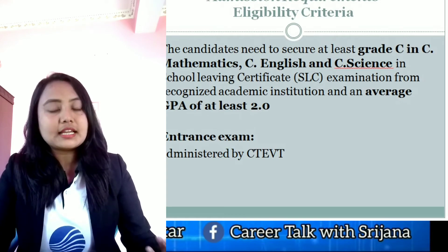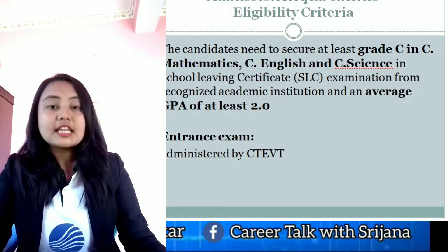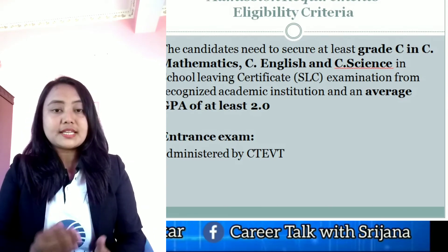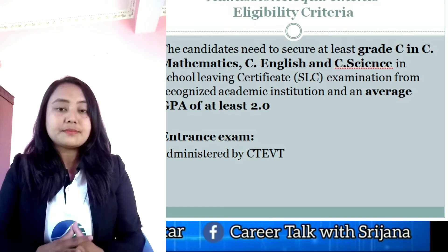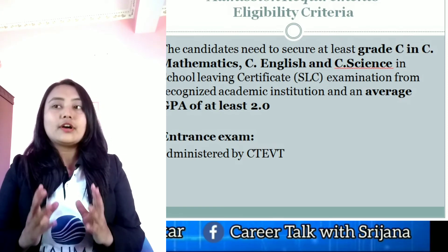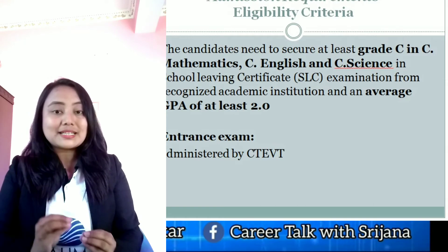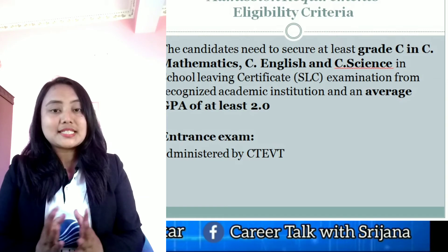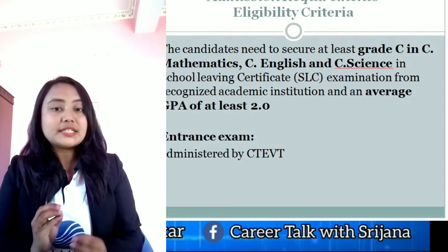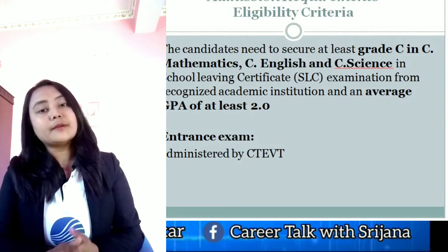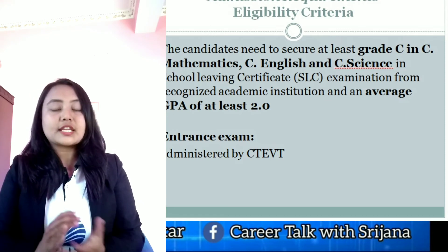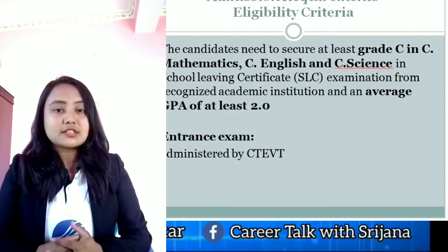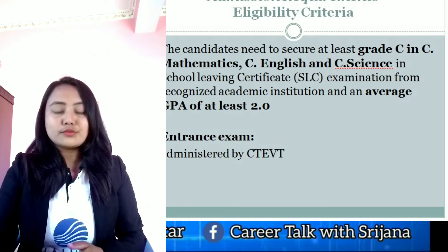Regarding admission requirements, to be eligible for this program, you can apply immediately after completing plus two. Your cumulative GPA should be 2.0 or above, and in mathematics, science, and English you should have a minimum C grade. If you meet these criteria you can apply for the certificate in dental hygiene. There is also an entrance examination under CTBT that you need to pass.